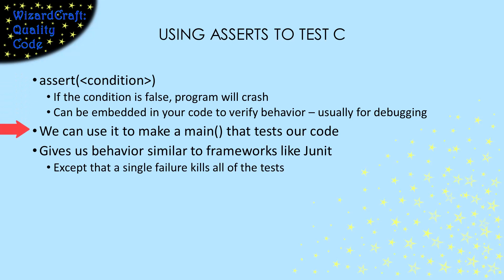We'll make a main that runs the tests and get behaviors similar to testing frameworks like JUnit, with the sad exception that a single failing test will stop the rest of the tests from running. Perhaps that will keep us motivated to build things a little bit at a time so that no more than one test is failing anyway. Doing this is going to require that we put the tests in one file and our production code in another file. If you need help knowing how to do that, check out the link above.